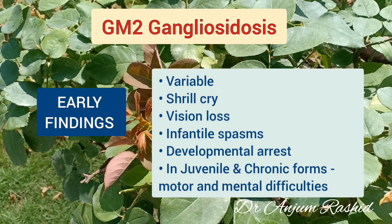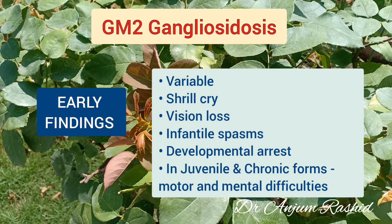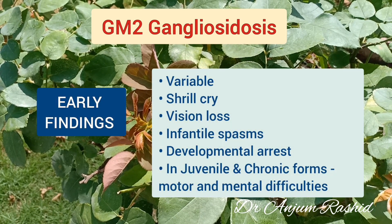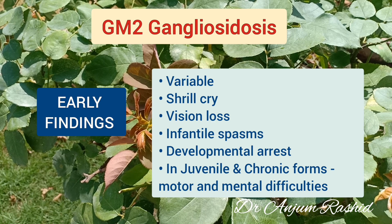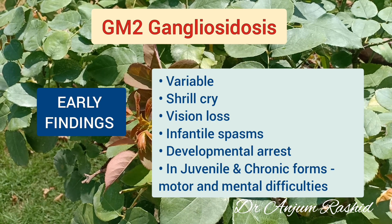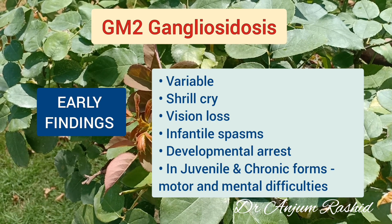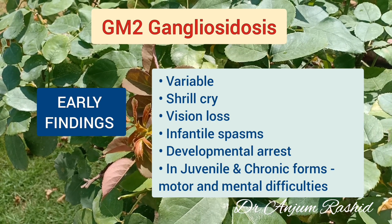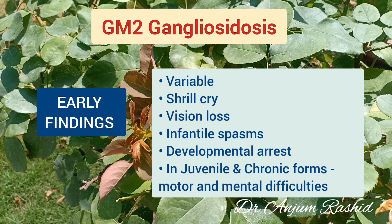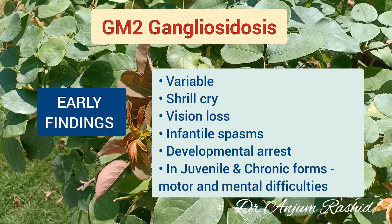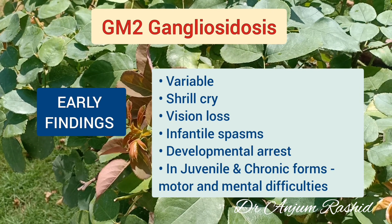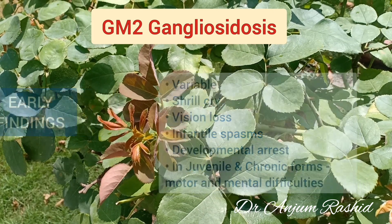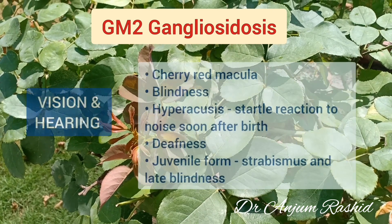The early findings are usually variable. There may be shrill cry, vision loss, infantile spasm, and developmental arrest. In juvenile and chronic adult forms, there may be motor and mental difficulties.